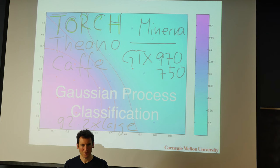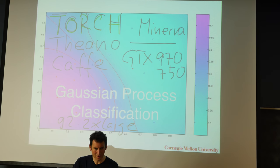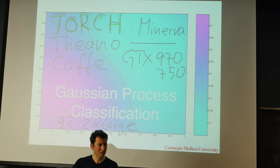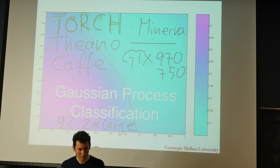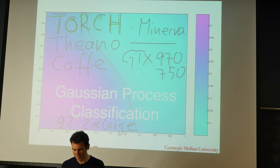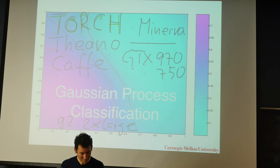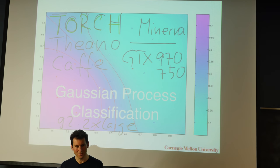Any questions on that so far? We'll be doing deep networks later in this class, just not right now. We can wrap up Gaussian processes by looking at Gaussian process classification, and then we're on to graphical models.